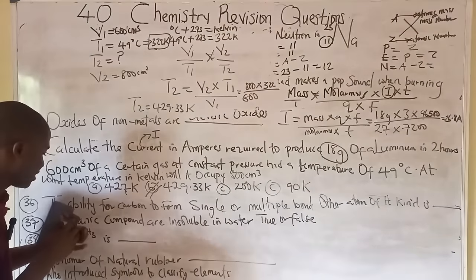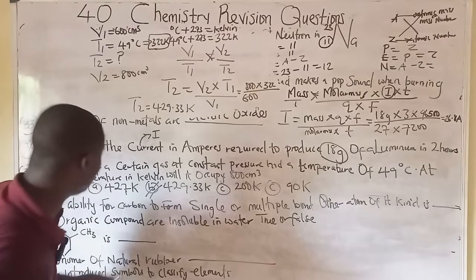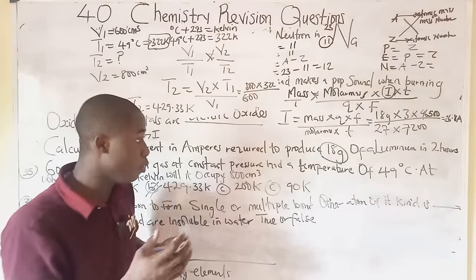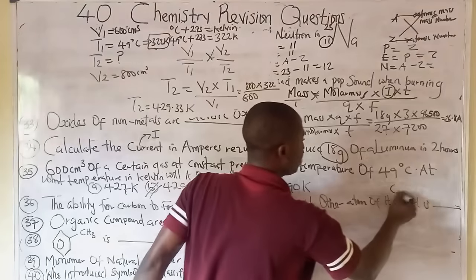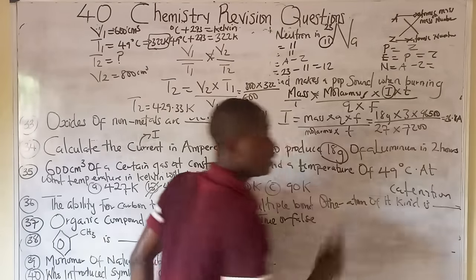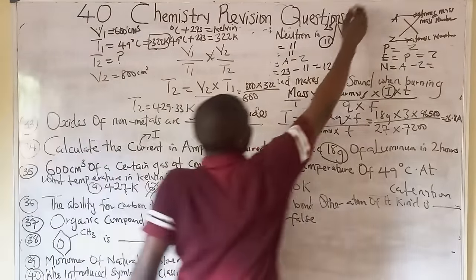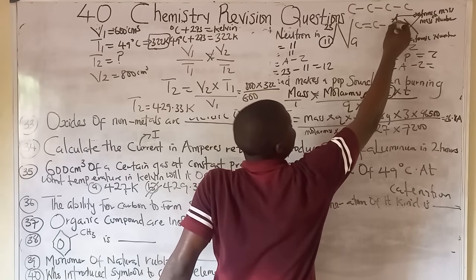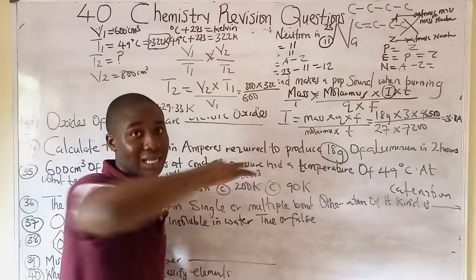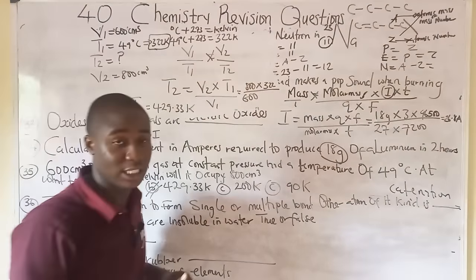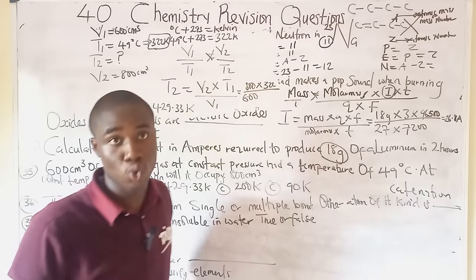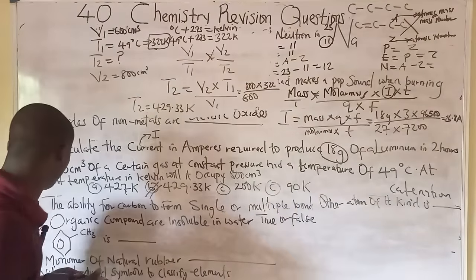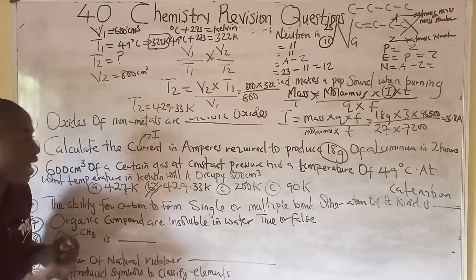Question thirty-six: the ability of carbon to form single or multiple bonds with other atoms of its kind is called catenation. Not only carbon exhibits catenation — oxygen in ozone, phosphorus, and others also catenate. Question thirty-seven: organic compounds are generally insoluble in water — this is true, and is a general characteristic of organic compounds.